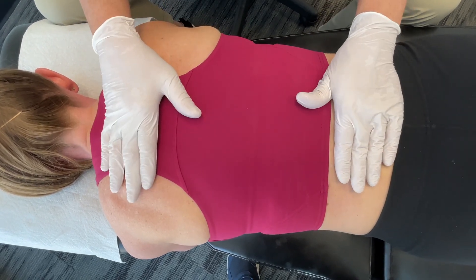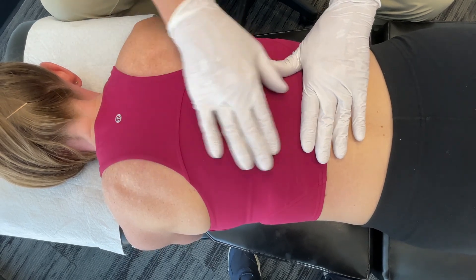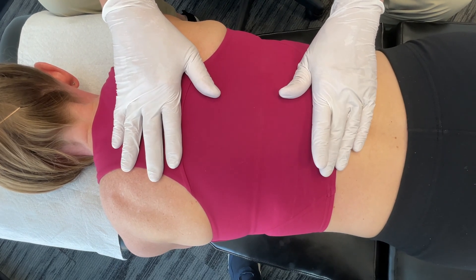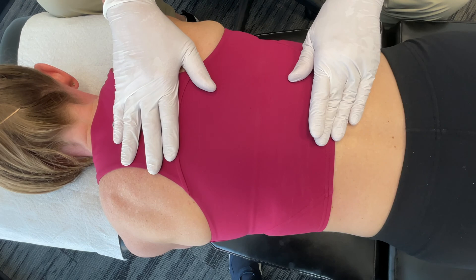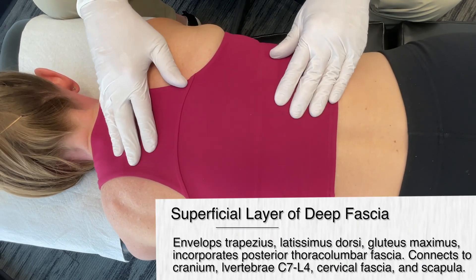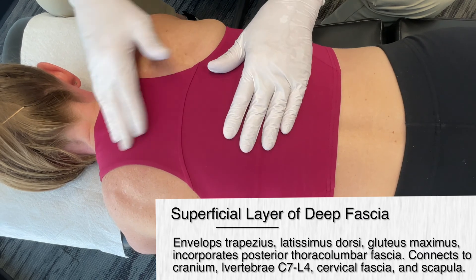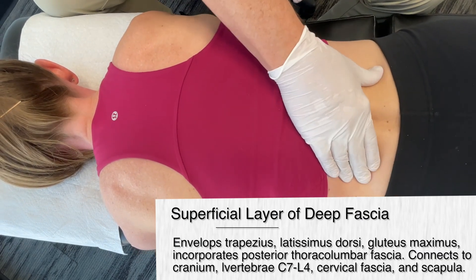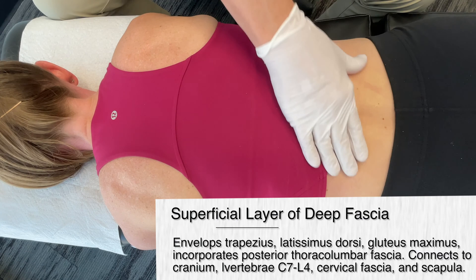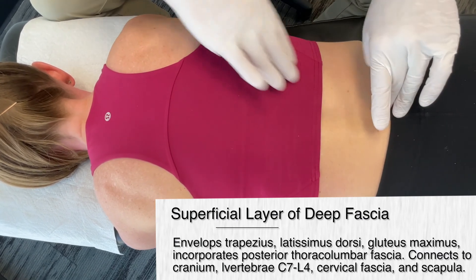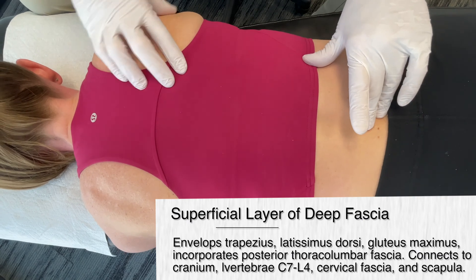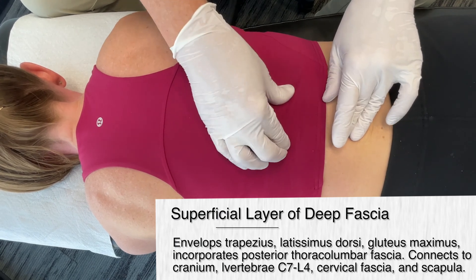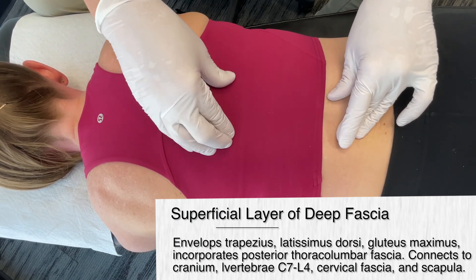If we're talking about the lumbar spine and different areas — mid-back and throughout, right up to the neck — we're going to talk about different layers: superficial, intermediate, and deep layers of the fascia. The superficial layer envelopes muscles such as the trapezius, the latissimus dorsi taking it all the way down into the low back — and also consider that latissimus dorsi connects back up into the shoulder — as well as muscles such as the gluteus maximus. It's also incorporated into the thoracolumbar fascia, which we will talk about in a second.